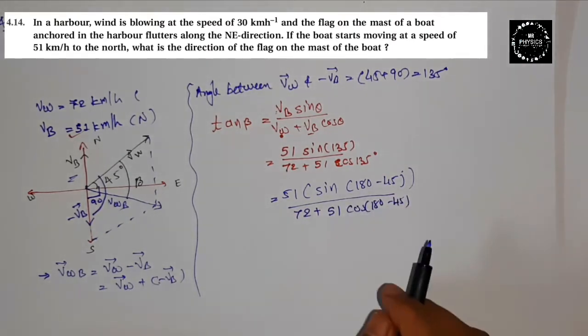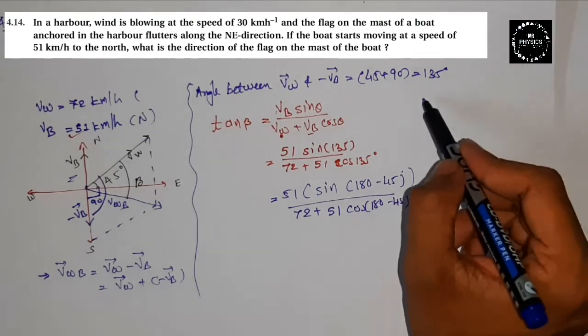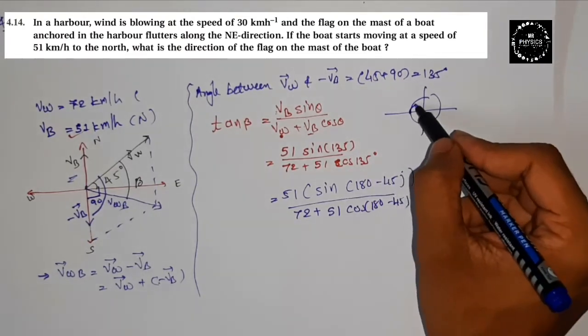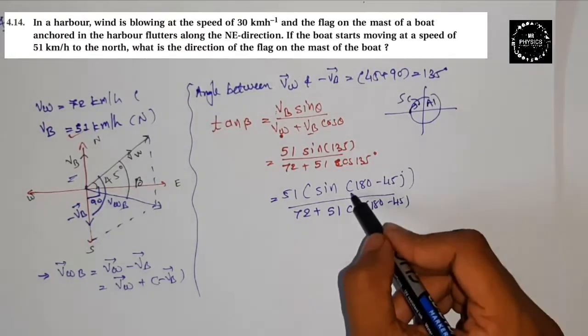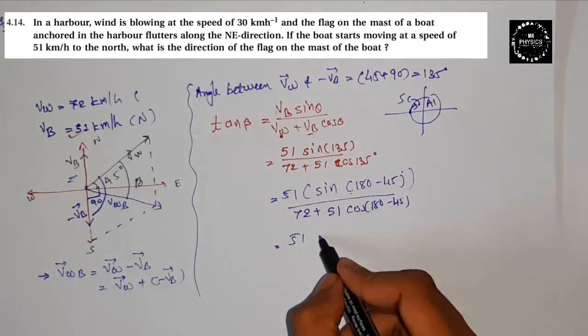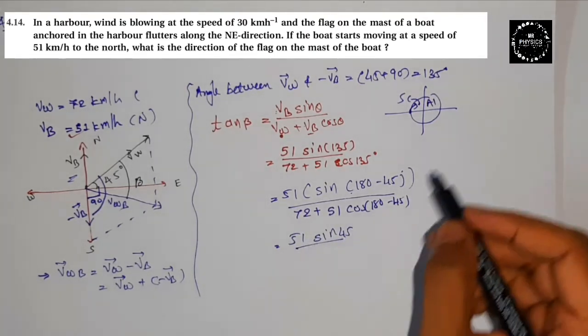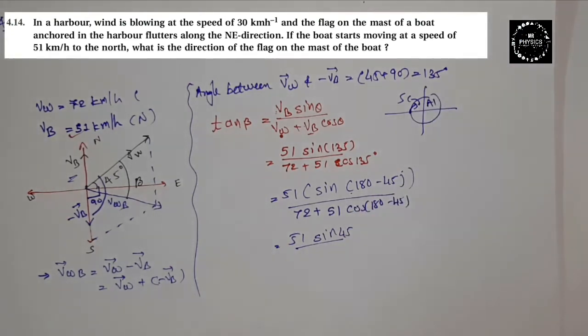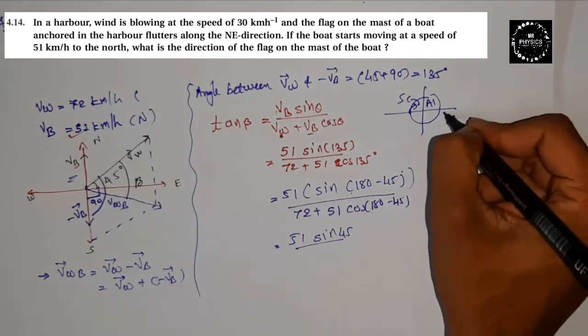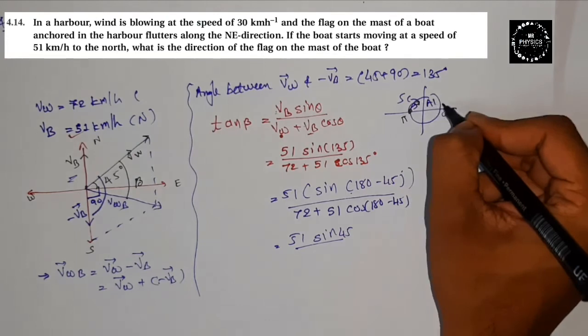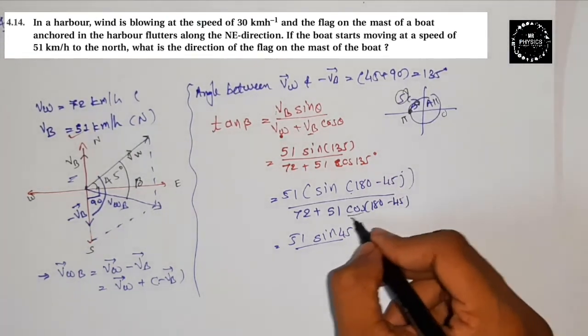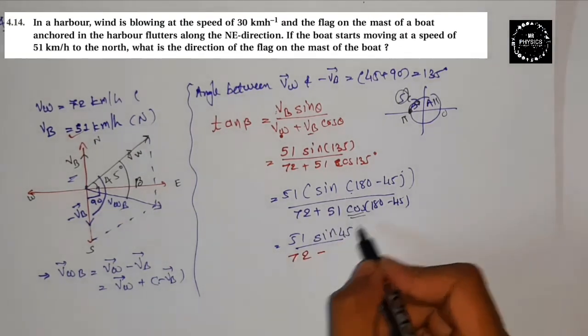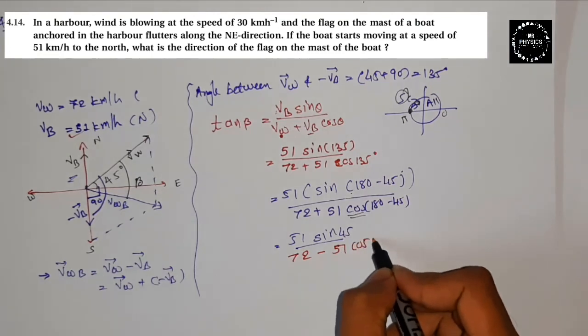180 minus 45 means using the unit circle, here 180 means reverse, here all, here sine component, here sine component. So here its sine is positive, meaning sine 45. Here cos, here reverse. Here also 180 means here, here 0, here pi. So reverse from here. So here sine component is positive, but what is cos? Here it's negative.